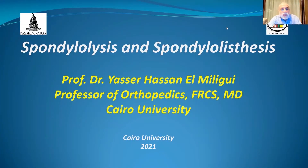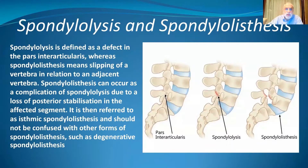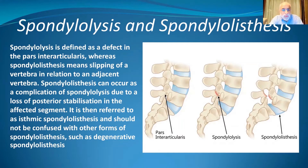Bismillah ar-Rahman ar-Rahim. Our topic today is spondylolysis and spondylolisthesis. Spondylolysis is defined as a defect in the pars interarticularis, whereas spondylolisthesis means slippage of a vertebra in relation to the adjacent one. Spondylolisthesis can occur as a sequelae of spondylolysis due to the loss of posterior stabilizing factors. It is then referred to as isthmic spondylolisthesis and should not be confused with other forms such as the degenerative one.